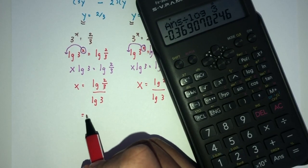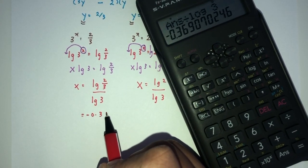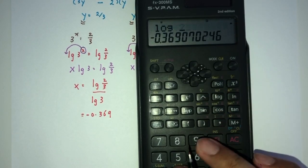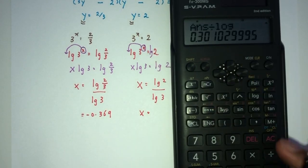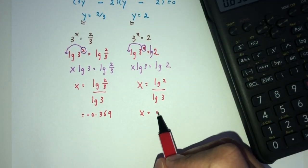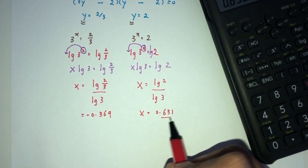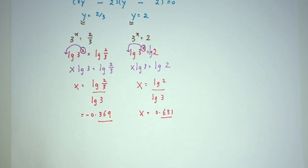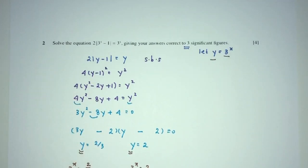That will be minus 0.369. Now, log of 2 divided by log of 3, 0.631. So, we have two values here, to 3 significant figures, for your values of x. And this is your answer for question number 2.